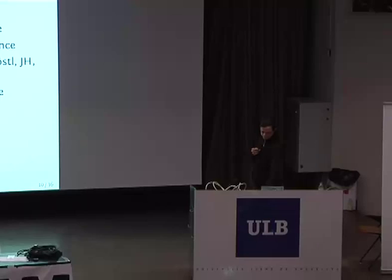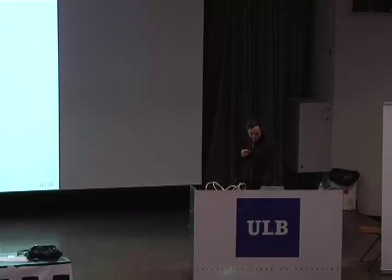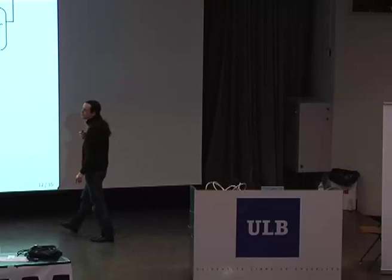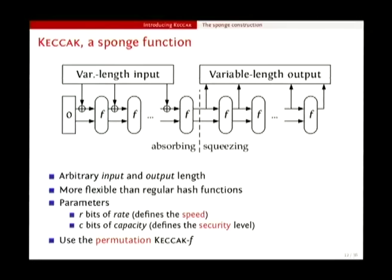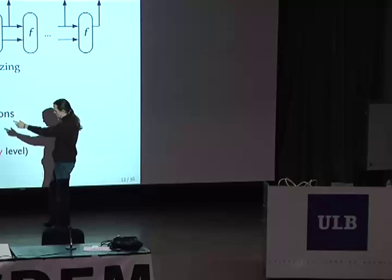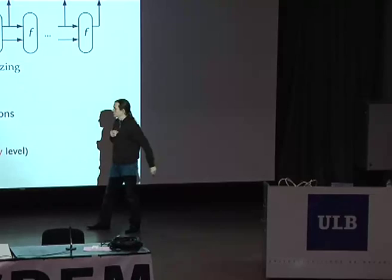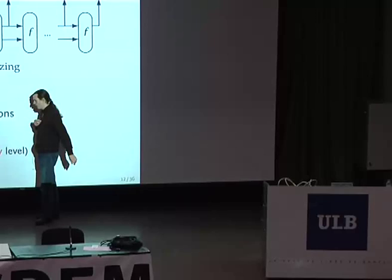So what is Keccak really? Keccak is actually more than just a hash function — it's what we call a sponge function. The main difference is that you can take any message of any length and produce another message of any length. The main thing is that it's much more flexible than hash functions. You have two parameters: the rate, which basically defines the speed of the function, and the capacity, which defines the level of security you can achieve.